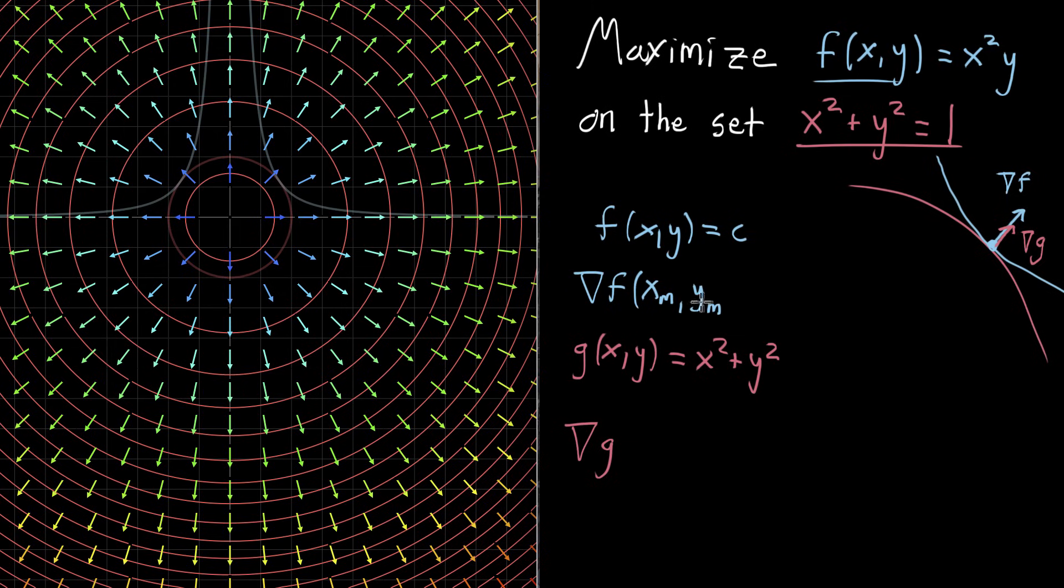The specific values of x and y that are going to be at this point that maximizes the function subject to our constraint. So that's going to be related to the gradient of g. It's not going to be quite equal, so I'll leave some room here. Related to the gradient of g evaluated at that same point, x m, y m.